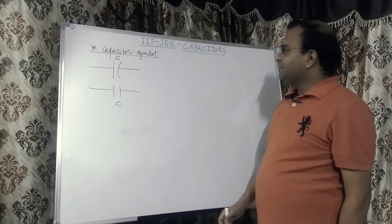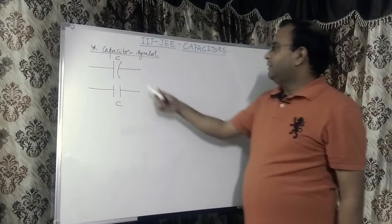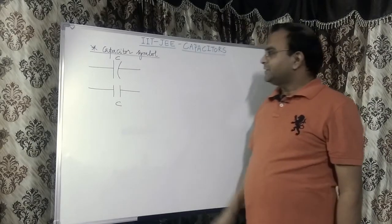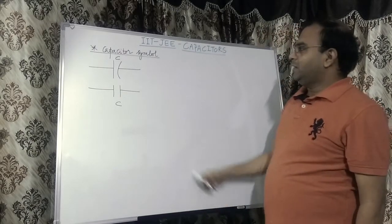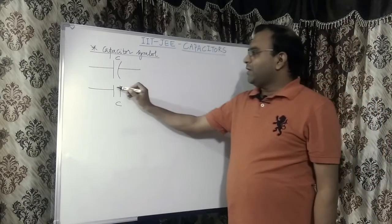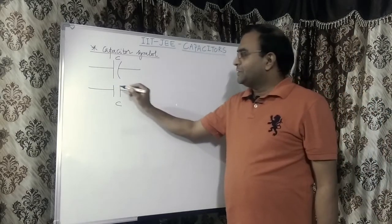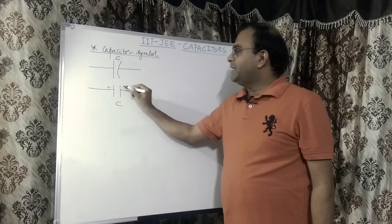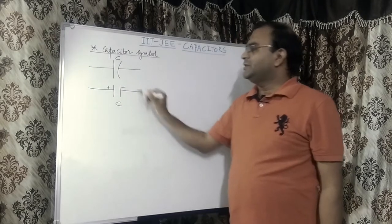The capacitor symbol — these are the symbols for the capacitor, where one of the plates is positively charged and the other plate is negatively charged.